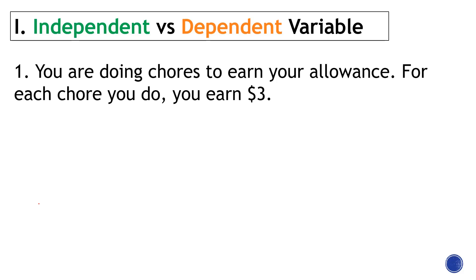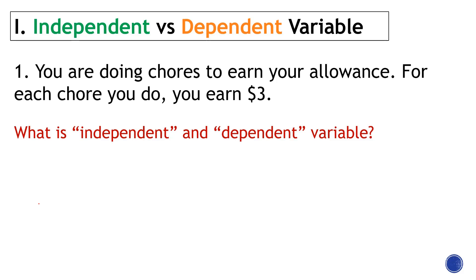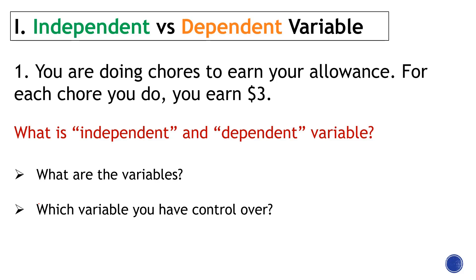You're doing chores to earn your allowance. For each chore you do, you earn $3. The chores that you do are your independent variable. Earning $3 is the dependent variable. You have control over the number of chores you will do.